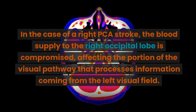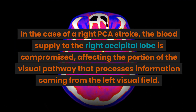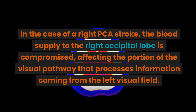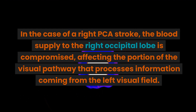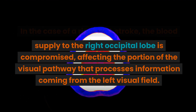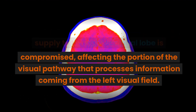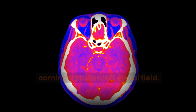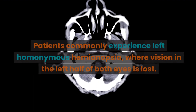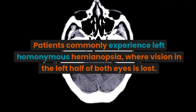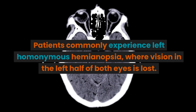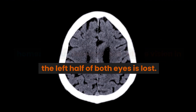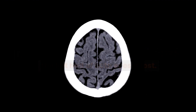In the case of a right PCA stroke, the blood supply to the right occipital lobe is compromised, affecting the portion of the visual pathway that processes information coming from the left visual field. Patients commonly experience left homonymous hemianopsia, where vision in the left half of both eyes is lost.